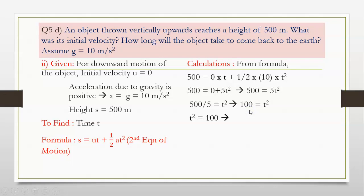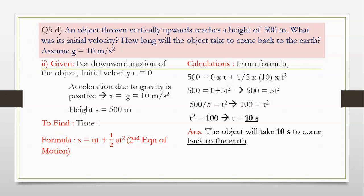The object will take 10 seconds to come back to the earth. Students, please remember the difference: when the object is thrown upwards, the gravity value will be minus g. But when it is coming downwards, the value of acceleration due to gravity g will be positive.